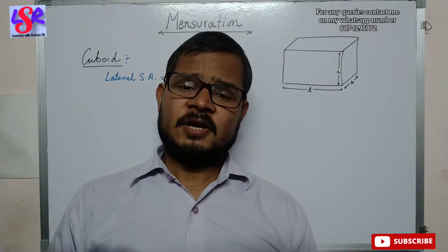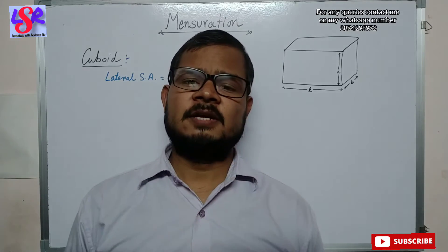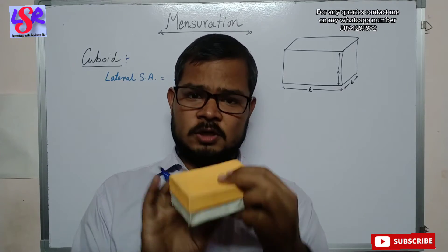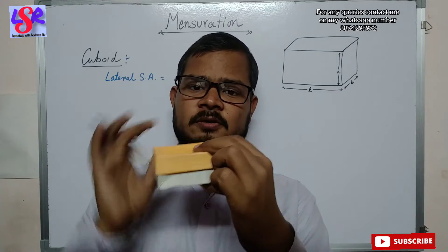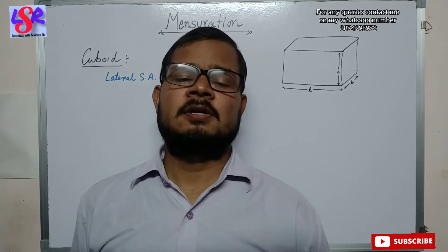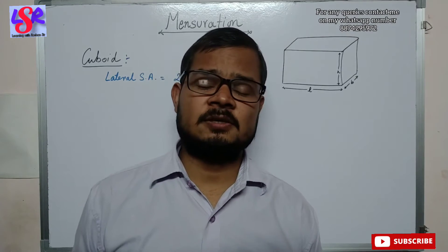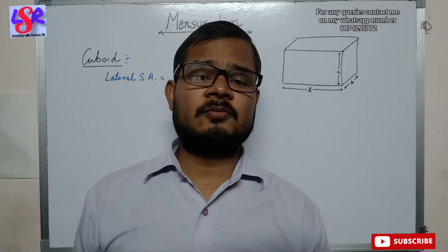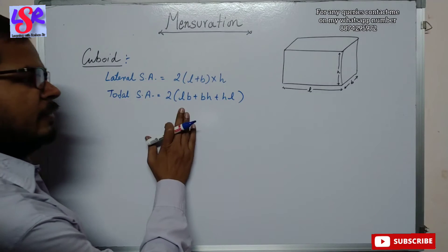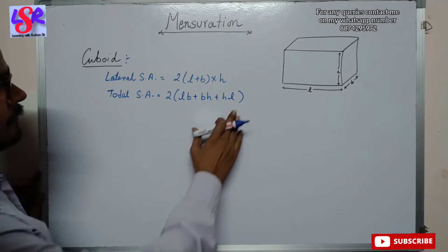If we include the top and the base as well — all six faces — then the formula for the total surface area of a cuboid is 2(LB + BH + HL).